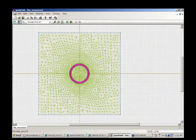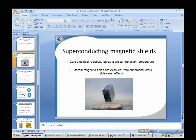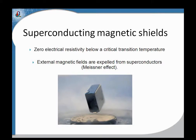The next topic is superconducting shields. Superconductors are characterized by zero electrical resistivity below a critical transition temperature, which would be 77 Kelvin for a high-temperature superconductor like YBCO. We're shielding magnetic fields because of the Meissner effect, which tends to push magnetic fields outside of superconductors.